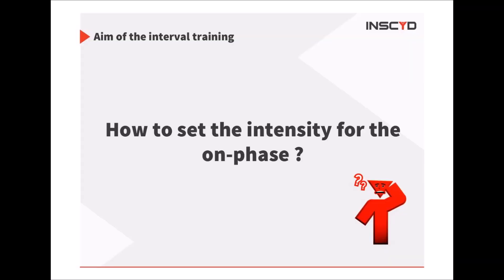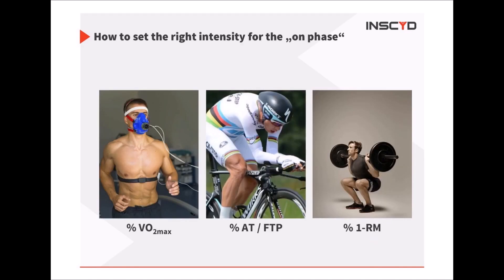The training intensity used in a certain training is normally derived — if you look into scientific studies or different sports — from the maximum capacity, the maximum performance of a specific system. In endurance sports, it has become very popular to have training intensities prescribed on the anaerobic threshold.